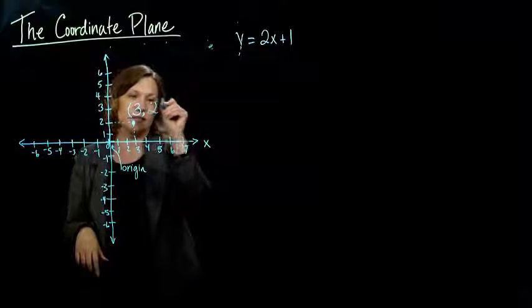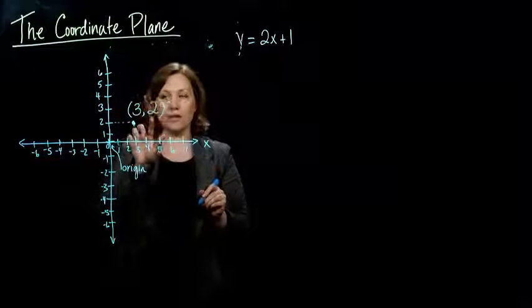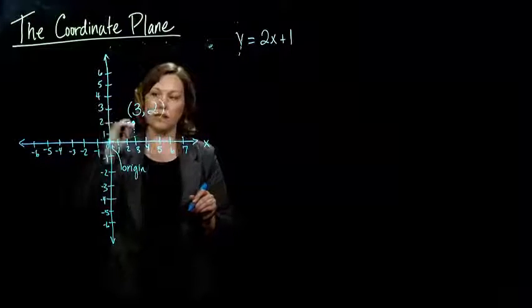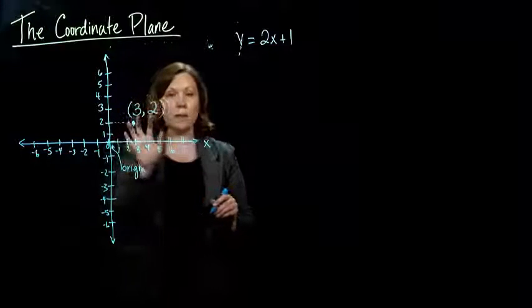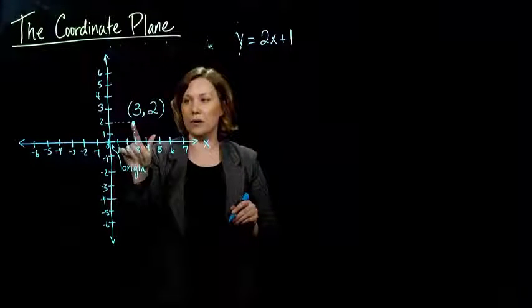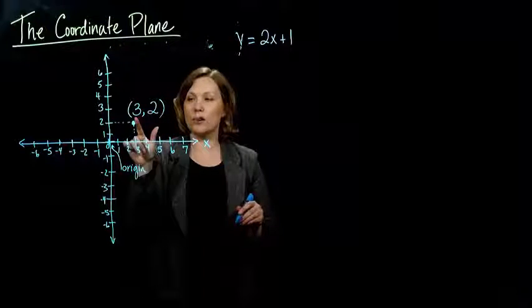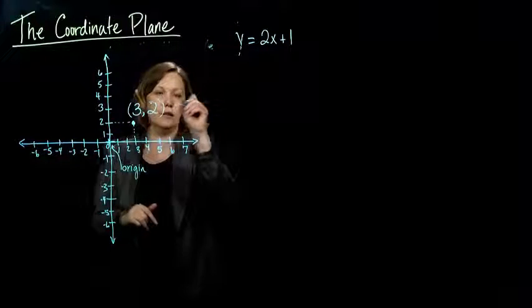And then the second number always represents what's on the vertical axis, so two. So we would represent this point as the number three, or as the ordered pair. We call this an ordered pair, three, two.